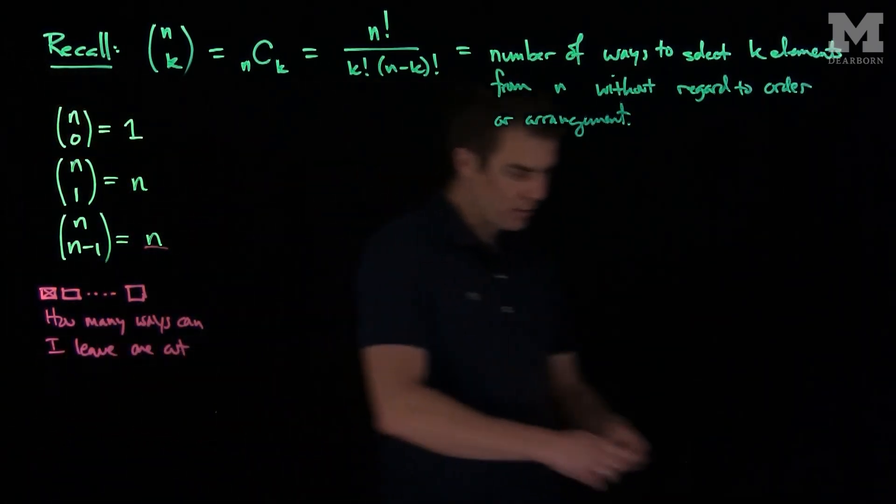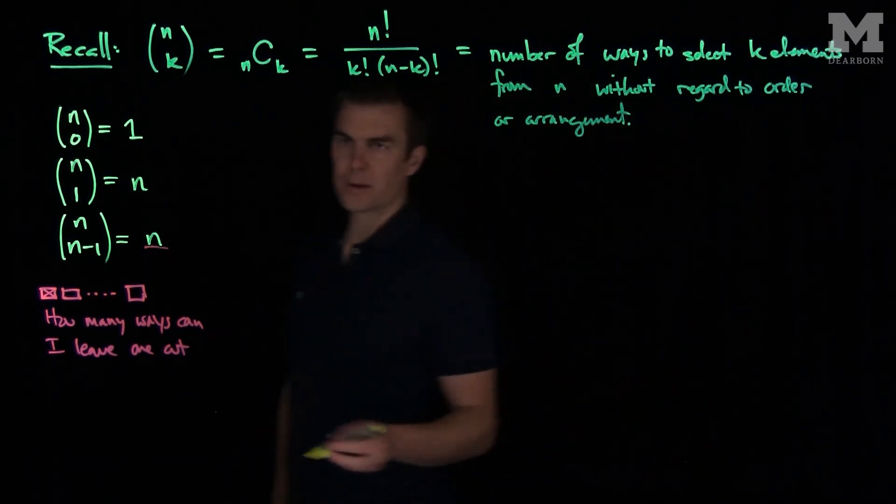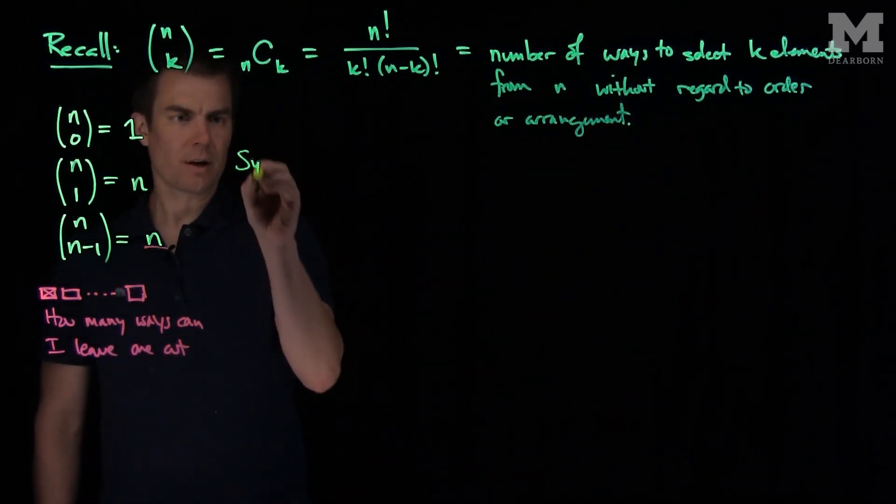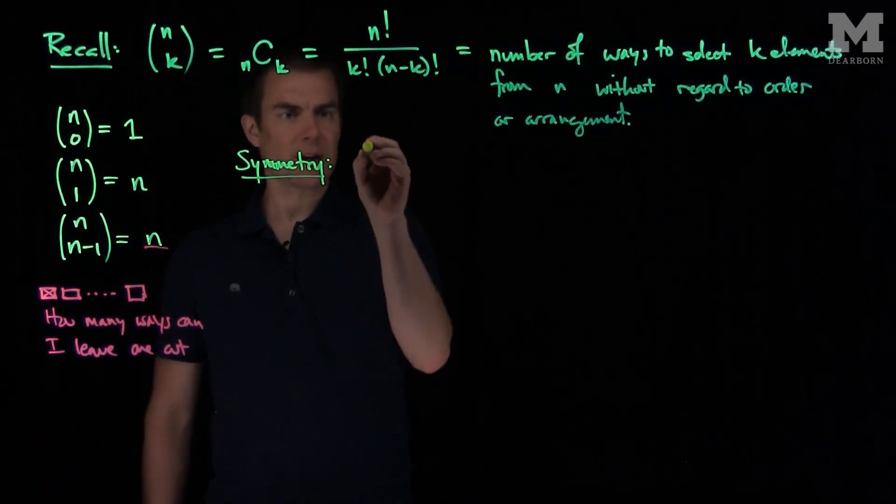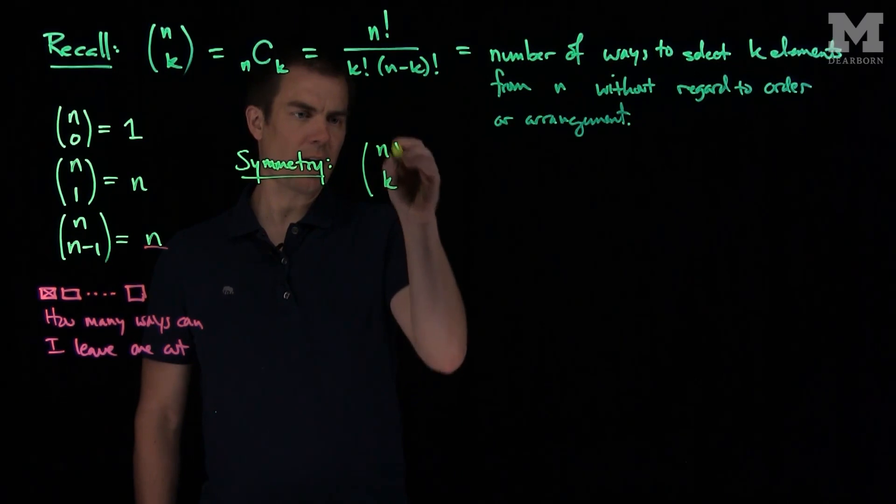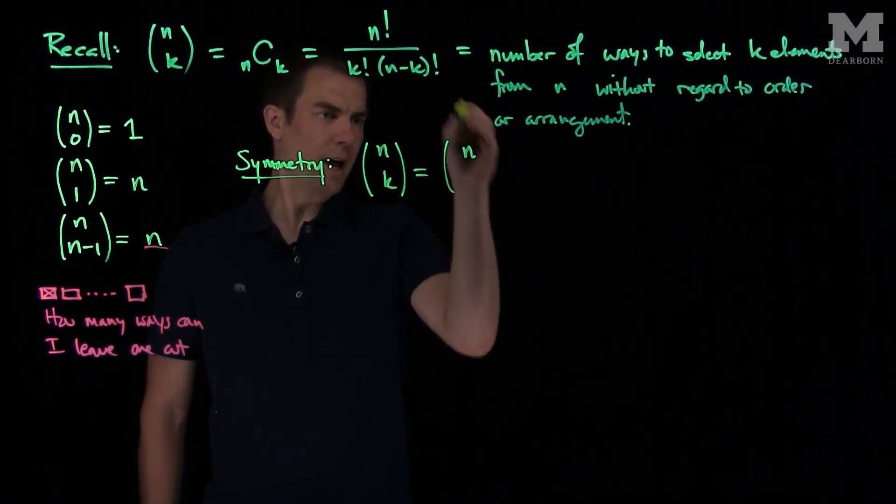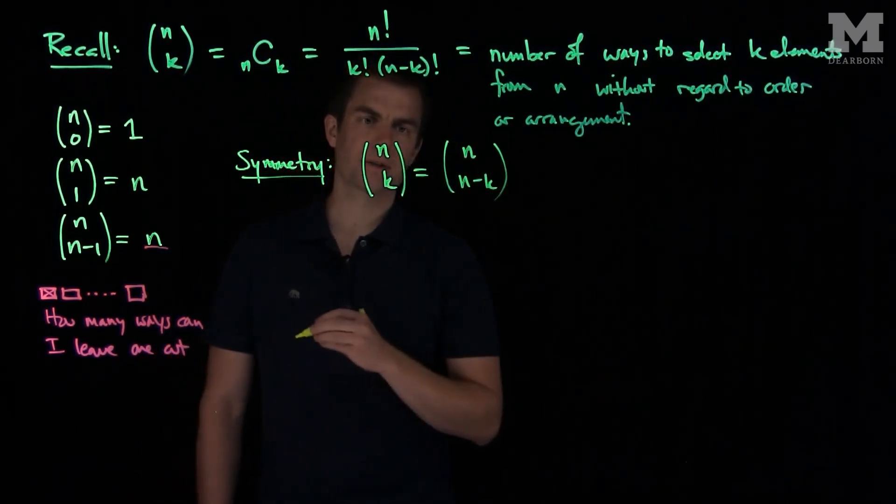And that comes from a more general symmetry principle, which says the following. The symmetry condition says that n choose k is the same as n choose (n-k).